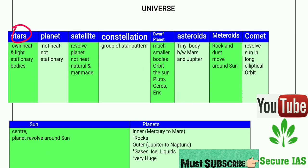Stars have their own heat and light, and they are stationary bodies. They are self-dependent — they don't depend on others — as they have their own heat and light and they don't revolve or rotate around anybody.